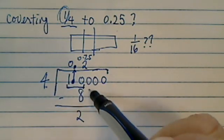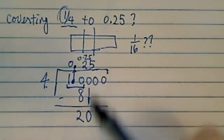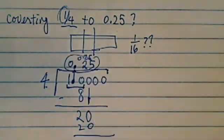And then you have a 2. And then this 0 comes down. 20, 4 goes into 20, 5 times. So therefore, 1 over 4 is equal to 0.25.